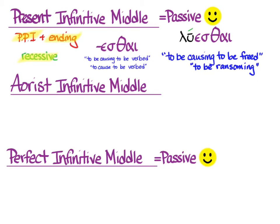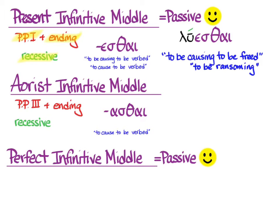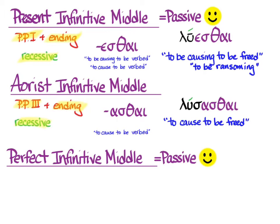The aorist infinitive middle comes from the third principal part, just like all aorist middle verbs. The ending is -asthai, accent is recessive, and the default translation is 'to cause to be verbed.' So with luō, we take the third principal part and the un-augmented tense stem, add the ending with recessive accent, and get lusasthai, meaning 'to cause to be freed,' or 'to ransom.'